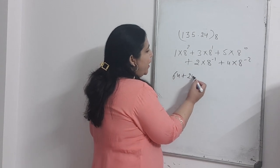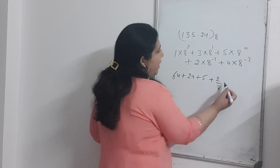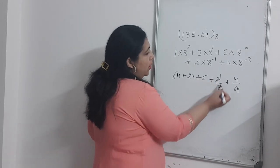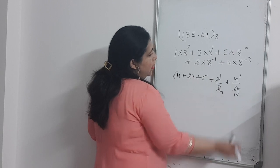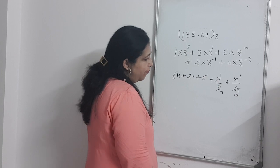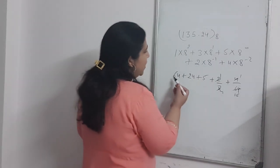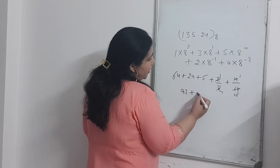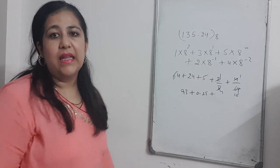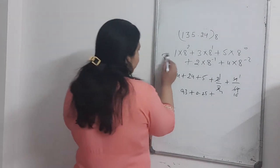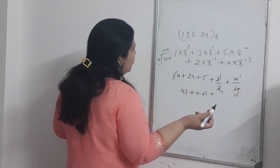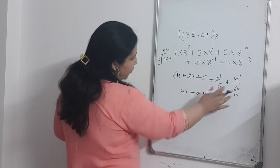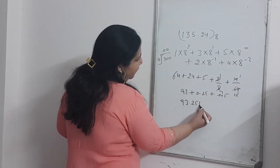So: 1 into 64 is 64, plus 3 into 8 is 24, plus 5. Then 2 upon 8 simplifies to 1 upon 4, which is 0.25. And 4 upon 64 simplifies to 1 upon 16. So 64 plus 24 plus 5 is 93, plus 0.25, plus 1 upon 16 which is approximately 0.0625. The result is approximately 93.3125 in decimal.